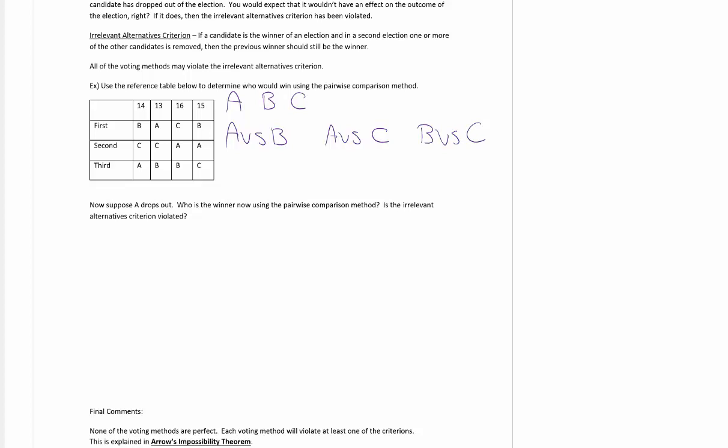Let's start with A versus B. B has beaten A for the first column, that's 14. The next one, A is over B, that's 13 for A. For C, A is over B, so that's 16. And then B over A for the 15. So we have 29, 29, so this part is a tie. Let's do A versus C. In the first column, C is over A. Second column, A is over C. Third column, C is over A. And then the last column, A is over C. That's 28 versus 30. So C wins that.